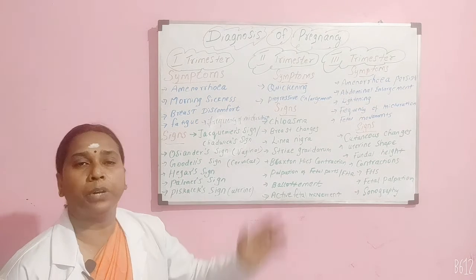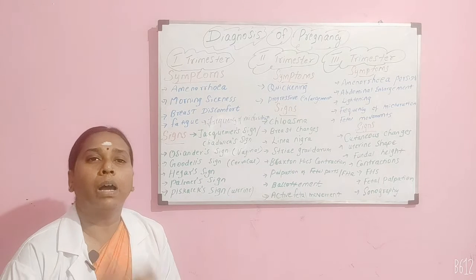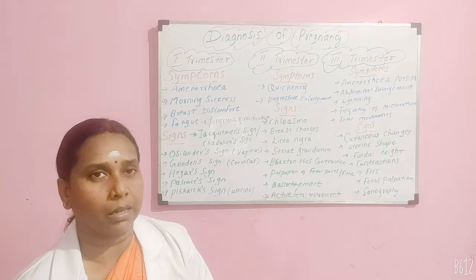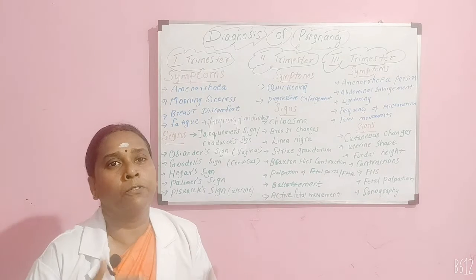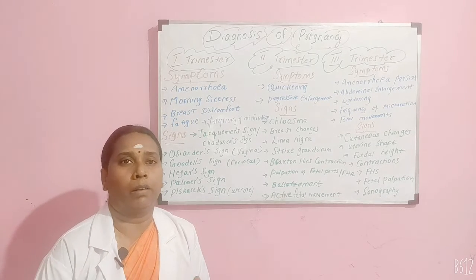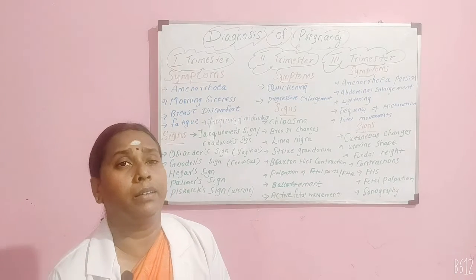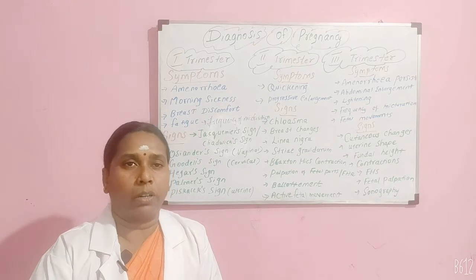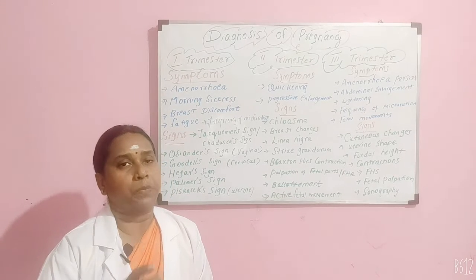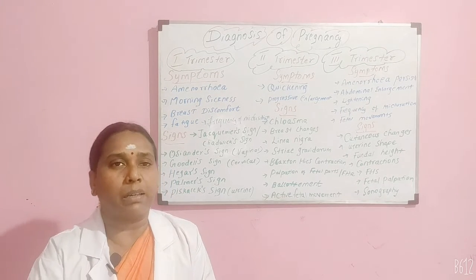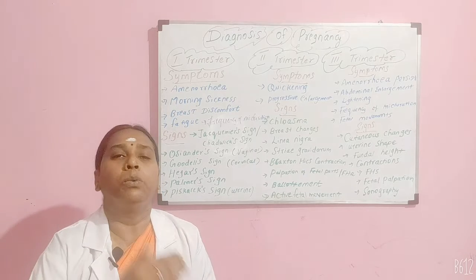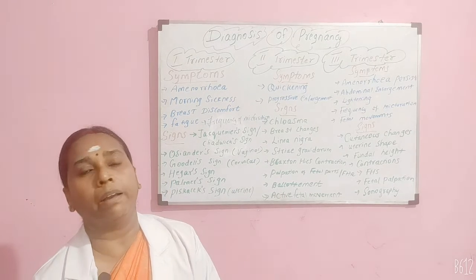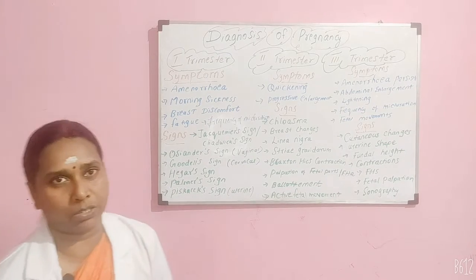Then comes the frequency of urination. This occurs because the uterus is a pelvic organ in the first trimester, and when it sits in the pelvis it compresses the bladder, so the mother frequently feels like urinating — that is why you get this frequency of urination.